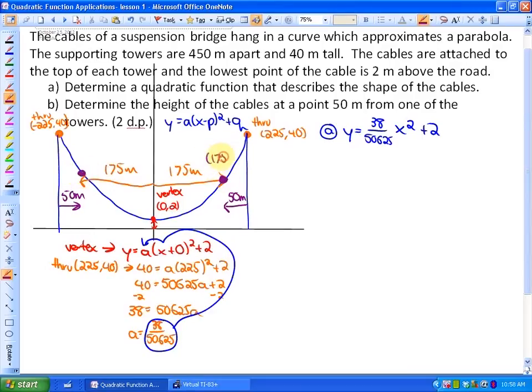Would be either 175 and some height or negative 175 and some height. In order to find out that height, all we need to do is use the function that we've already determined and substitute 175 or negative 175 in for x. So in our answer to b, we're going to input 175 in for x.